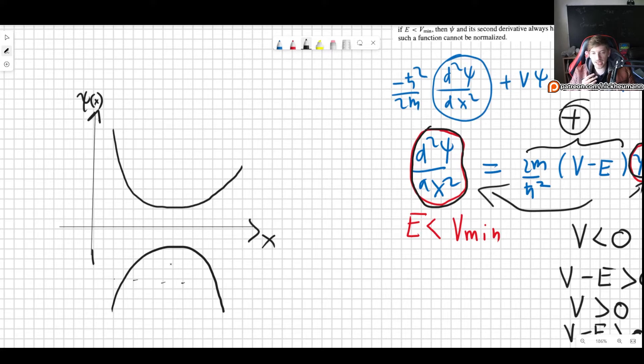Now look what happens as x goes to infinity or minus infinity. Our wave function is going to infinity or to minus infinity, depending on which case we are. But either way, it's very much not going to zero. And it will never go to zero because it will never change signs.